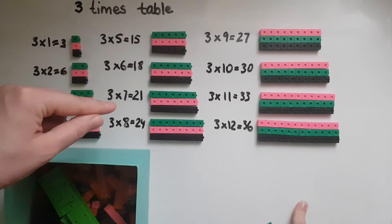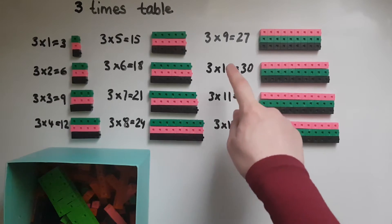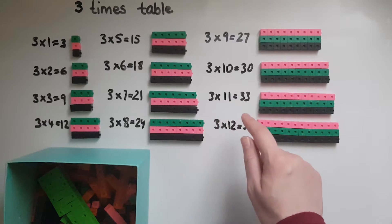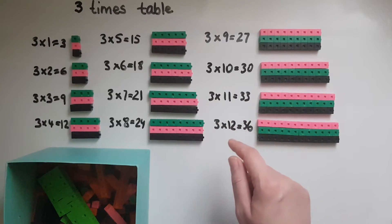Three times eight equals 24. Three times nine equals 27. Three times 10 equals 30. Three times 11 equals 33. Three times 12 equals 36.